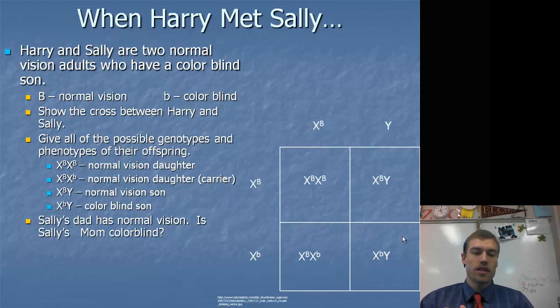Sally's dad has normal vision. Is Sally's mom colorblind? No, but she is a carrier. If the dad has normal vision, that means that Sally, who's this one over here, is automatically going to be getting her big B from father, which means that her mother must have been a carrier.